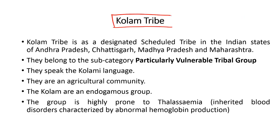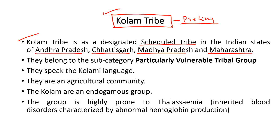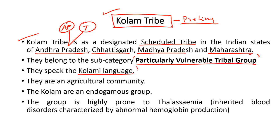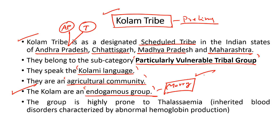Let us also discuss some basic facts about the Kolam tribe which can be important for prelims. The Kolam tribe enjoys the scheduled tribe tag in Andhra Pradesh, Chhattisgarh, Madhya Pradesh and Maharashtra. After the state was split they are found in both Andhra Pradesh and Telangana, and enjoy the status of particularly vulnerable tribal group. They speak the Kolami language and it is predominantly an agricultural community. The Kolam tribe is an endogamous group, meaning they always marry within their own social group or community. This tribe is also highly vulnerable to Thalassemia, which is a type of inherited blood disorder caused by abnormal hemoglobin production.